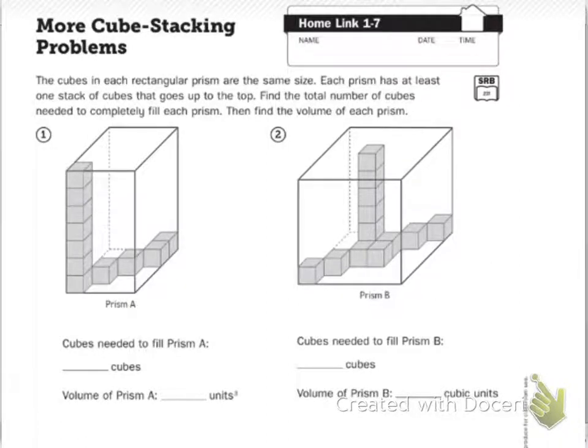HOMELINK 1-7 More Cube Stacking Problems. The cubes in each rectangular prism are the same size. Each prism has at least one stack of cubes that goes to the top. Find the total number of cubes needed to completely fill each prism. Then find the volume of each prism.